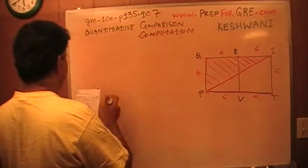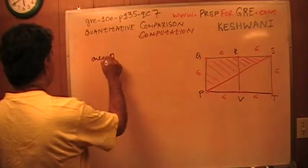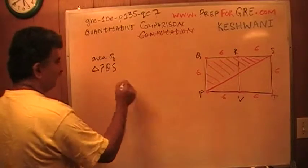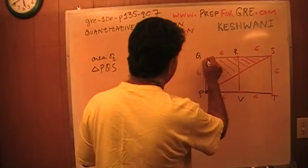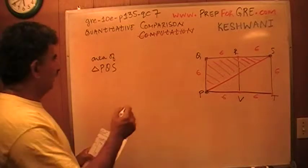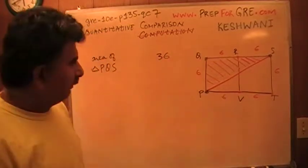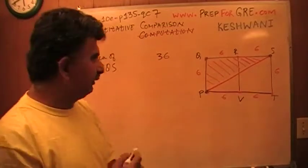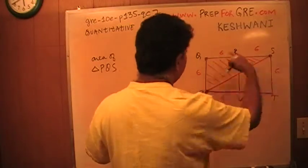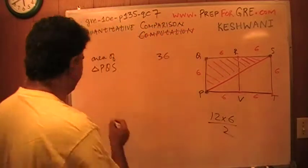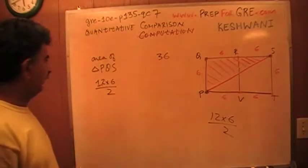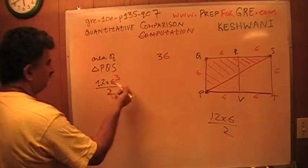I'll do it both ways. The area of the shaded region PQS, I'm just going to call it area of triangle PQS. We are asked to compare it against 36. Well, one way is very simple. Just take the area of the whole rectangle, which is 12 times 6. From P to S is 12, and the width is 6. Then take half of it. 12 times 6 divided by 2. And that boils down to 12 times 3, which is 36. Here we have 36.